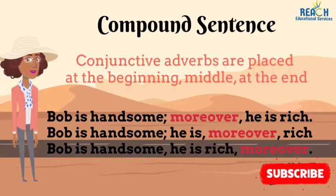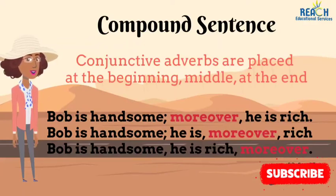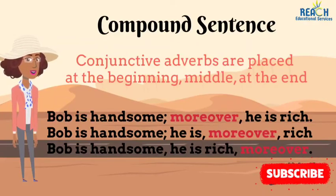Conjunctive adverbs are known as floating adverbs because they can be positioned anywhere in the sentence — at the beginning, in the middle, or at the end. For example: Bob is handsome; moreover, he is rich — moreover at the beginning. Second: Bob is handsome; he is, moreover, rich — moreover in the middle. Last: Bob is handsome; he is rich, moreover — moreover at the end. Regardless of where moreover is placed, the sentence maintains its meaning: Bob is handsome and he is rich.